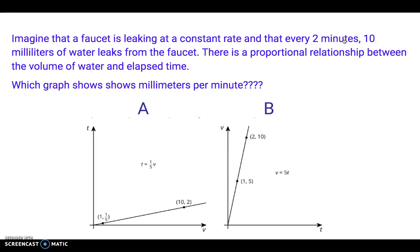Another example would be imagine that a faucet is leaking at a constant rate and that every 2 minutes 10 milliliters of water leaks from the faucet. There is a proportional relationship between the volume of the water and elapsed time. Which graph shows milliliters per minute?